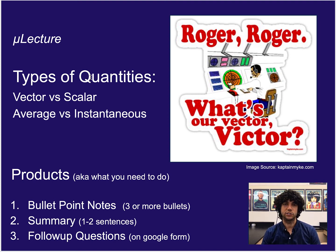I'm Ben Canning and this lecture is going to be on types of quantities. We're going to focus on vectors versus scalars and average versus instantaneous.